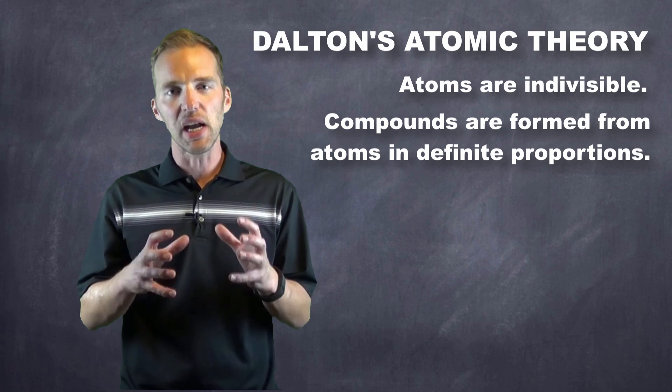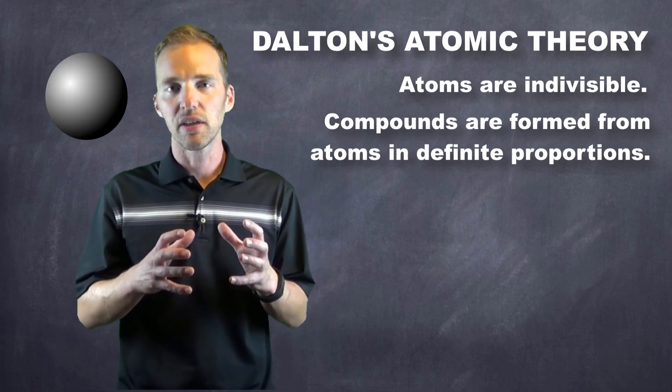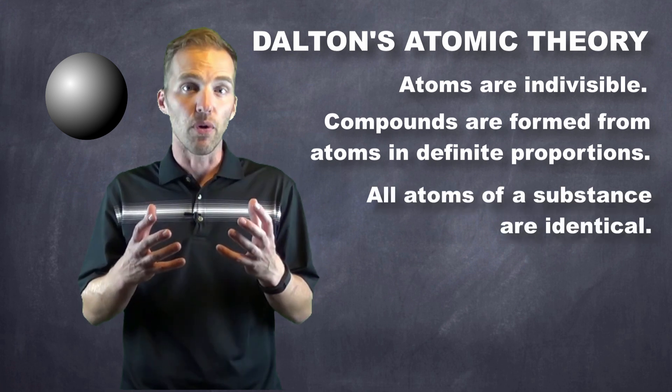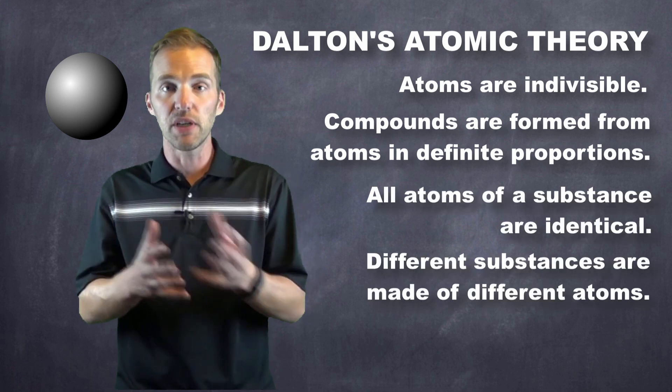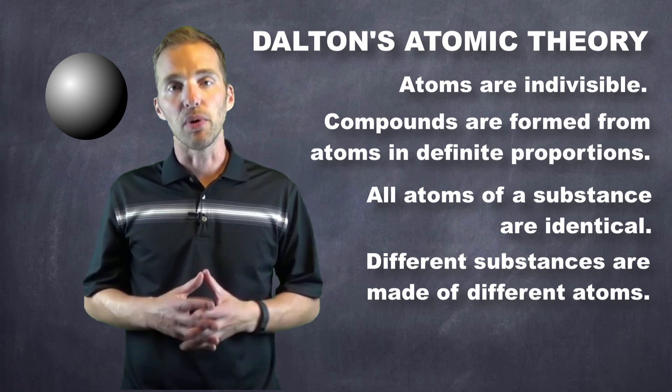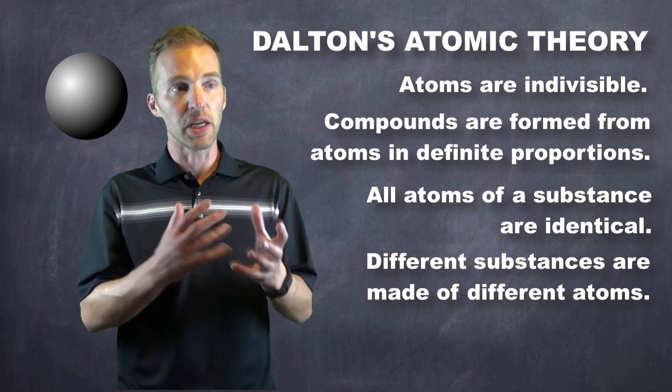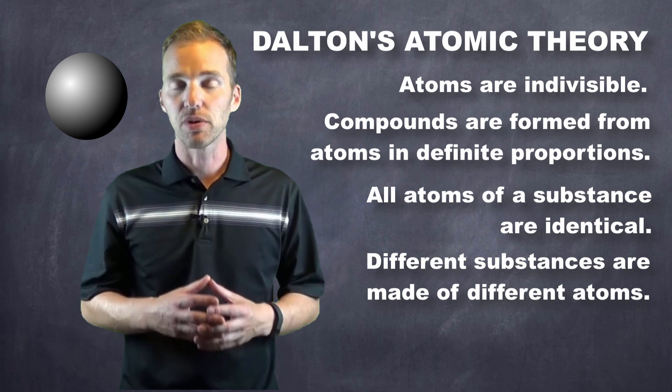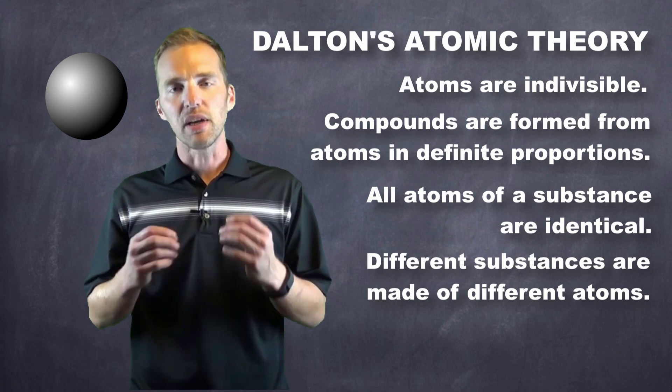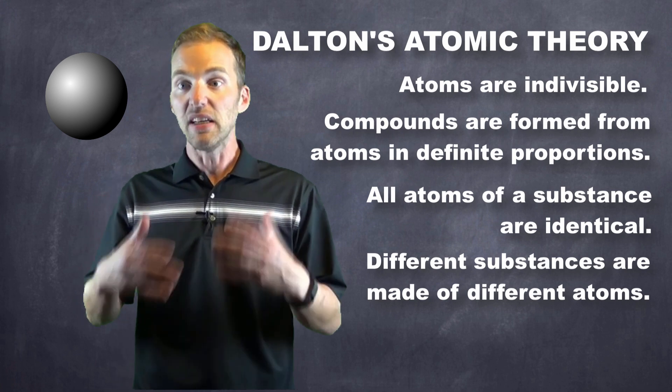And he hypothesized that these tiny, indivisible spheres, which he envisioned look a little bit like this, were the same for all substances that were the same, and were different for different substances. So, for example, he theorized that gold atoms would all be the same as other gold atoms, but they'd be different than copper atoms, but all of the copper atoms would be the same as other copper atoms. So, he came up with several tenets of his atomic theory that held for many numbers of years.